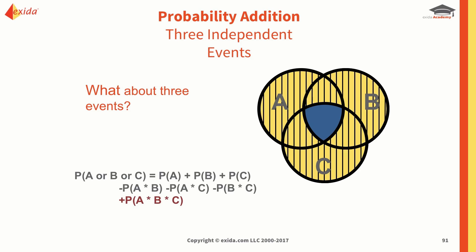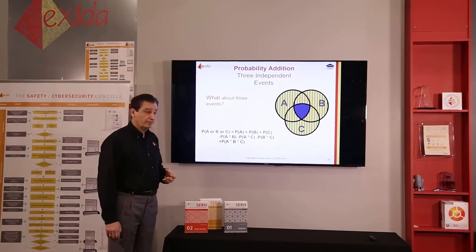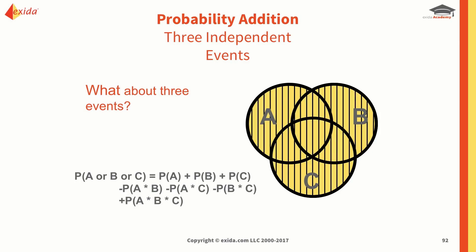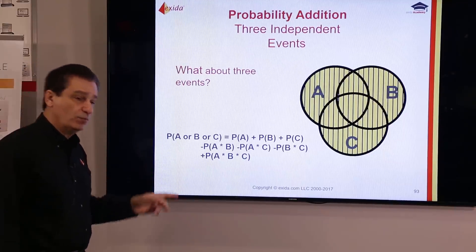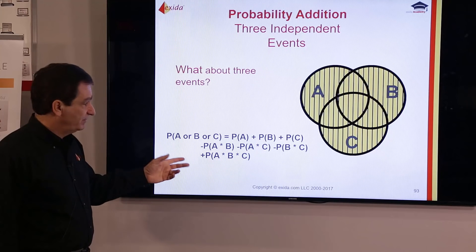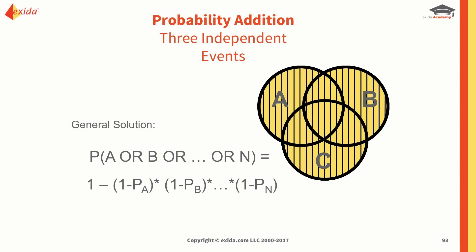This makes the math slightly more complicated. Another way using the complement rule is to say the probability of A or B or C, or any number of events n, equals 1 minus [1 − P(A)] times [1 − P(B)] times [1 − P(C)] and so forth up to n. This simplifies the math, but we must remember to subtract from 1, otherwise we will not get the correct answer.